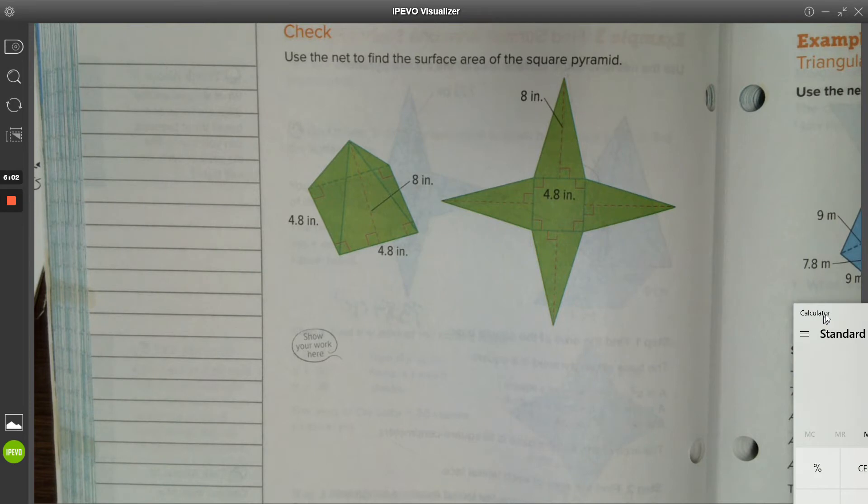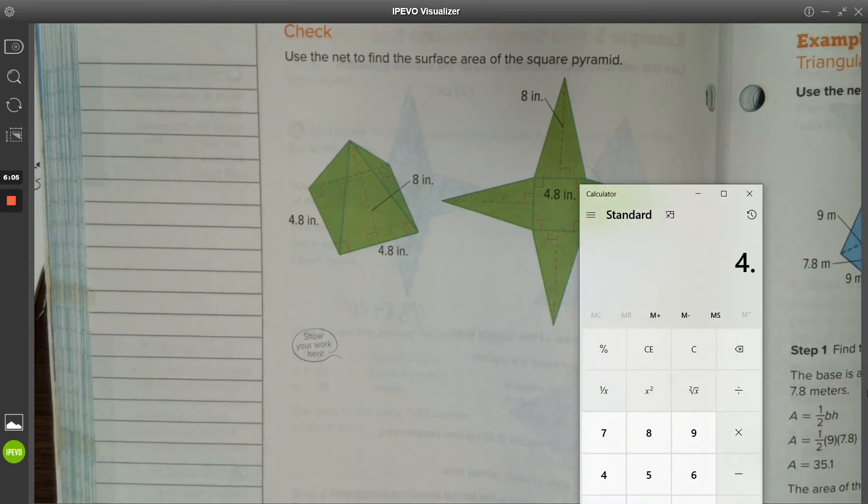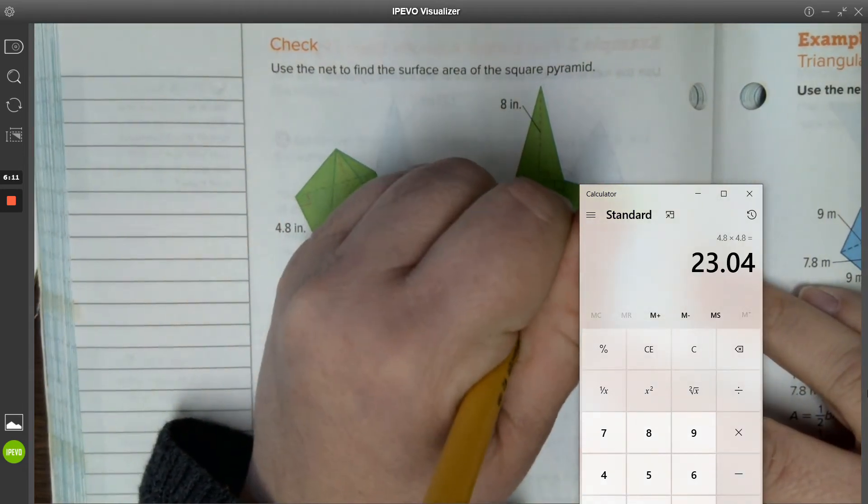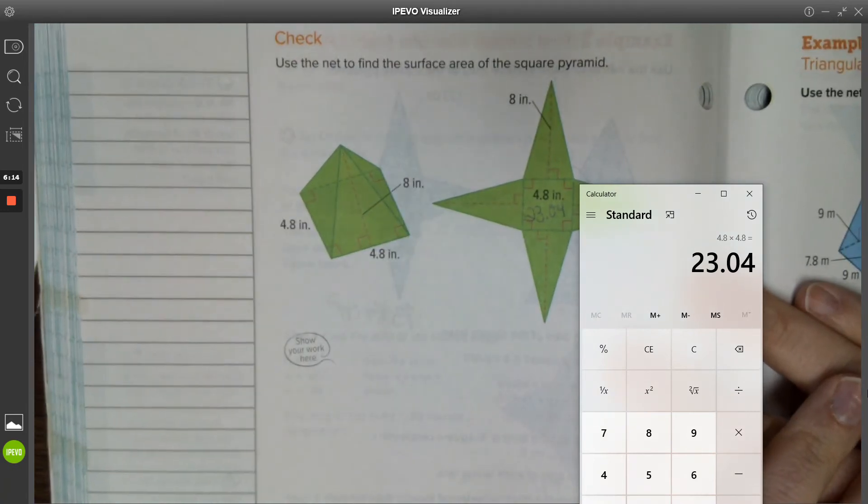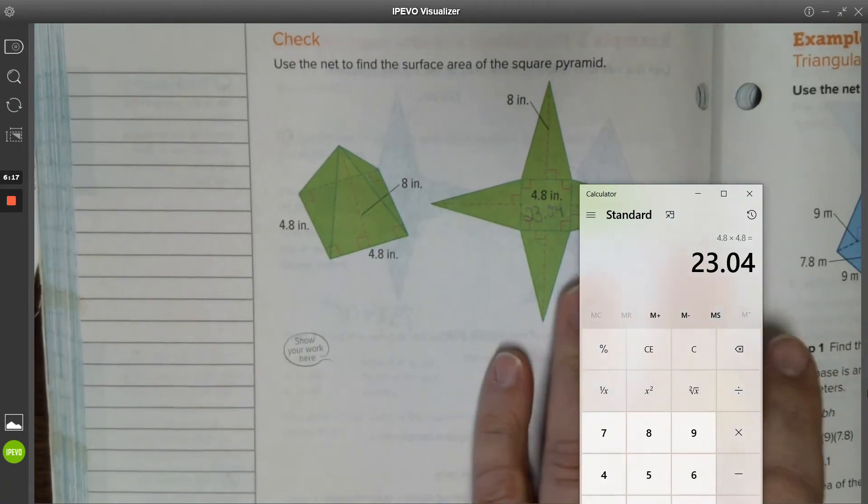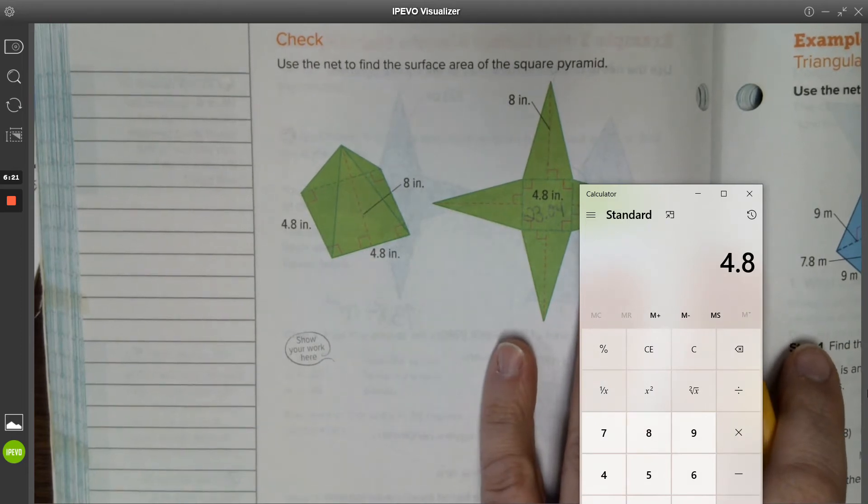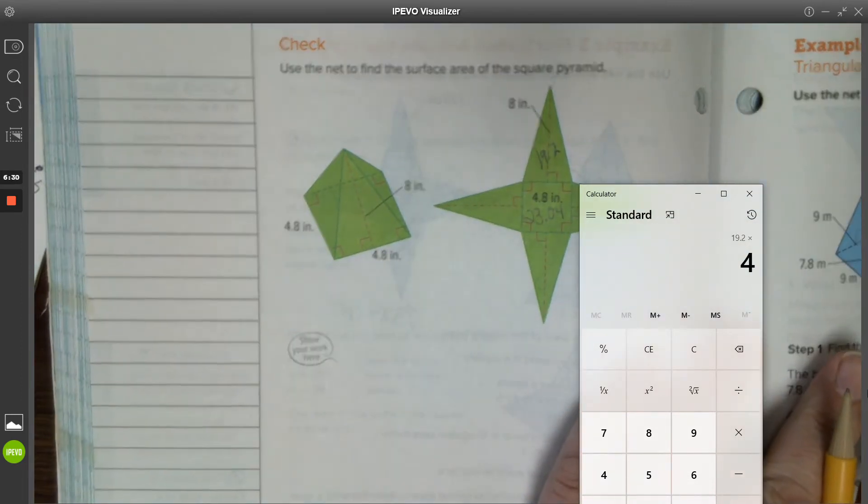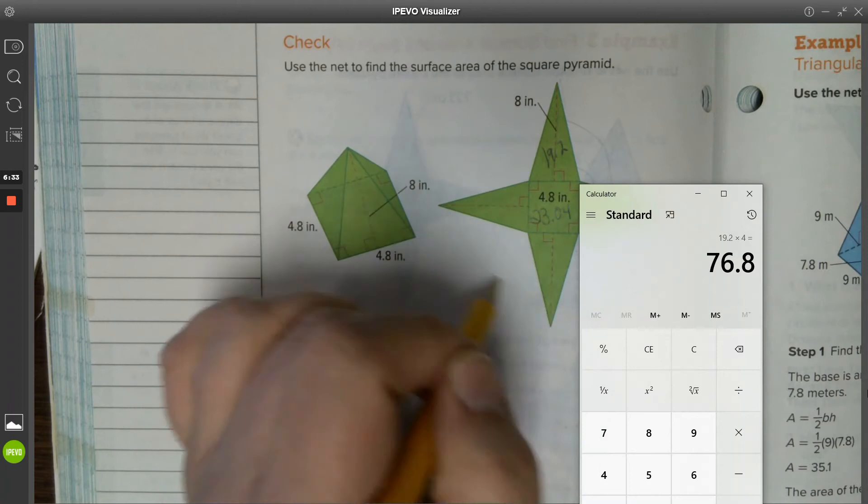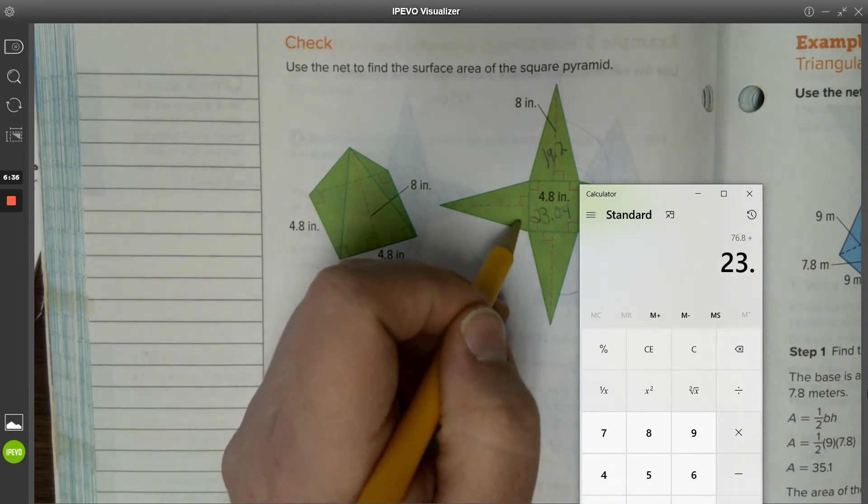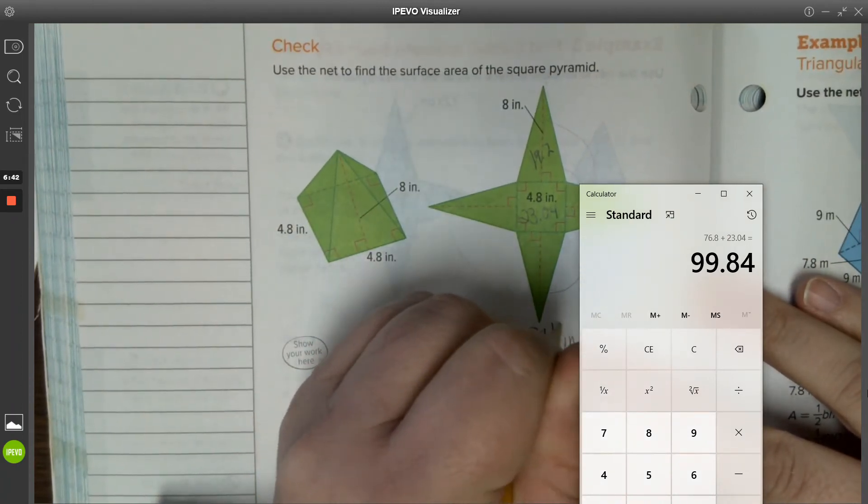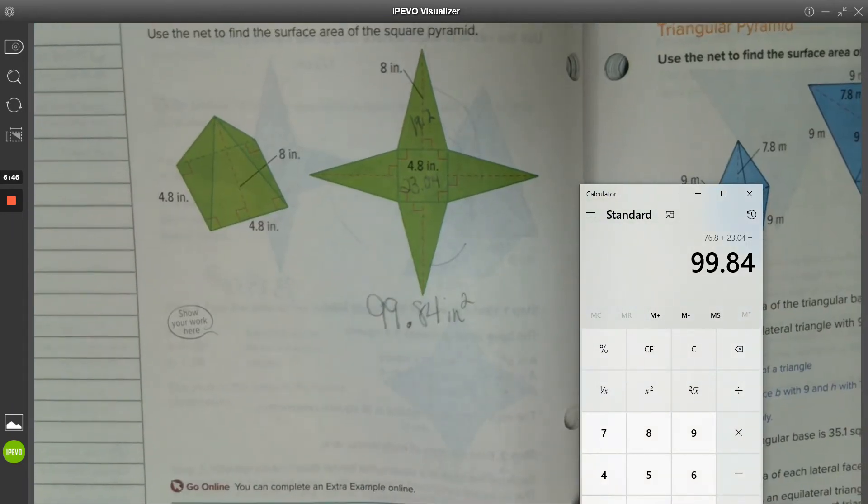Like I said, the first step is find the area of your base: 4.8 times 4.8, the base is 23.04. Then we do 4.8, which is the base, times the slant height 8. Now because it's a triangle we divide by 2. Each of these is then worth 19.2. We multiply that by 4 to get the sum of the faces and add in our base, and you should get a total of 99.84 inches squared for your surface area of this pyramid.